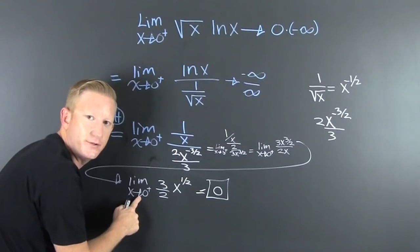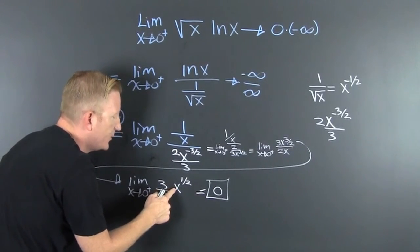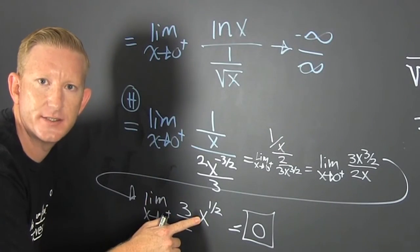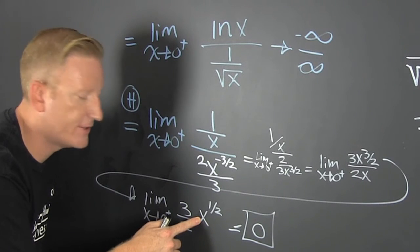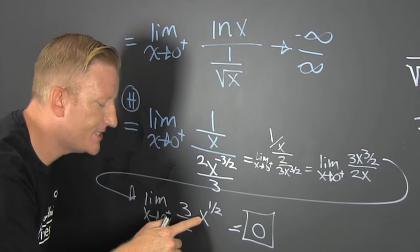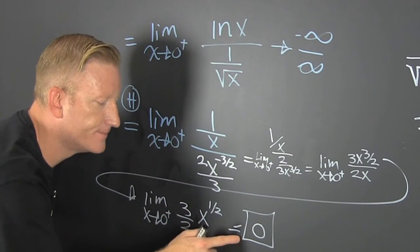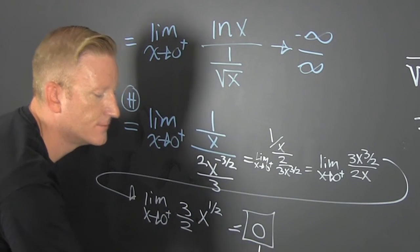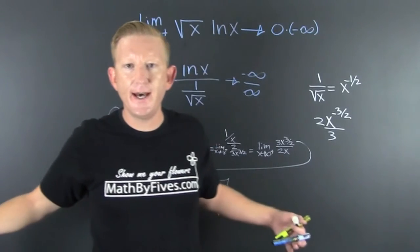As x goes to zero, you put zero in there. When you put zero in there, you take the square root of zero. When you take the square root of zero, you get zero. And then zero times three halves is nothing — zero.